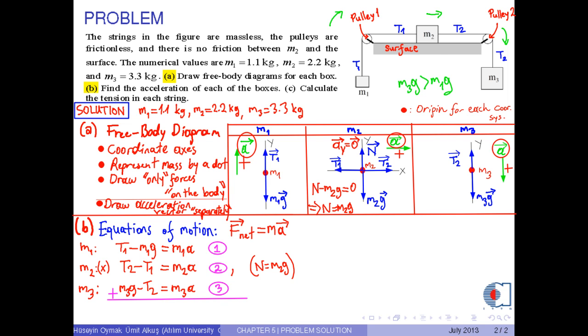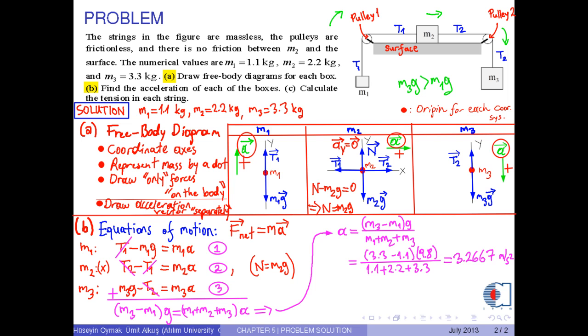After that, if we add these equations up side by side, we obtain M3 minus M1 times G equals M1 plus M2 plus M3 times A. From this equation, we get an expression for acceleration. With the corresponding numerical values, we obtain 3.2667 meters per second squared, or in three significant figures, it is approximately 3.27 meters per second squared. And this is the solution for part B.